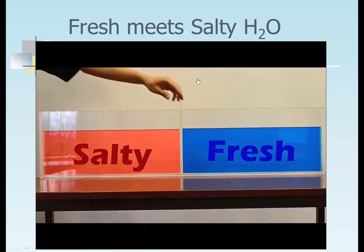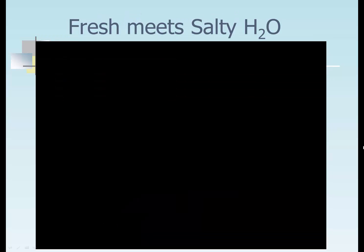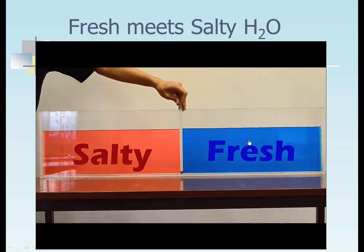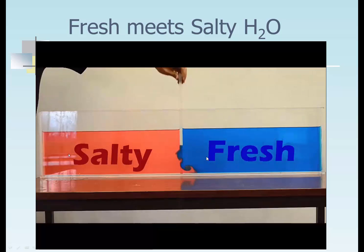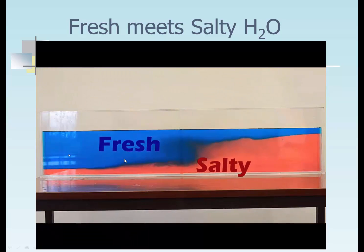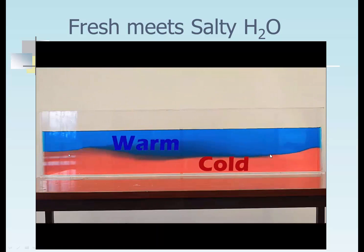They're going to move this glass barrier, and when they do, you can see the salty water moves in one direction and the fresh water moves in the other direction. Now they're moving the separation screen, and you can see the salty water moves in and the fresh water starts moving in. This is actually an internal wave — you can see the different densities of water slosh back and forth, but there's no real connection between them.